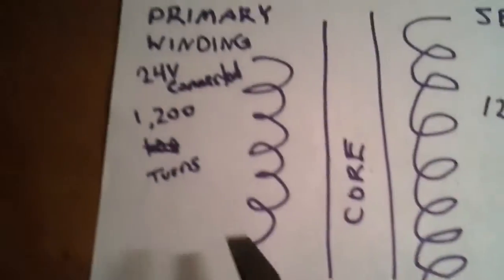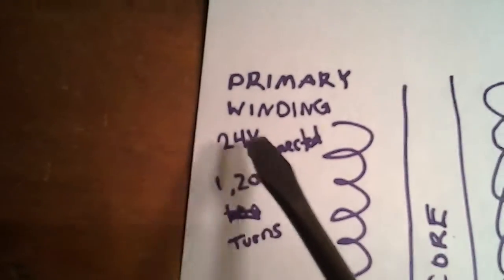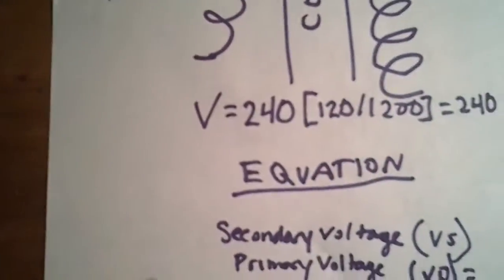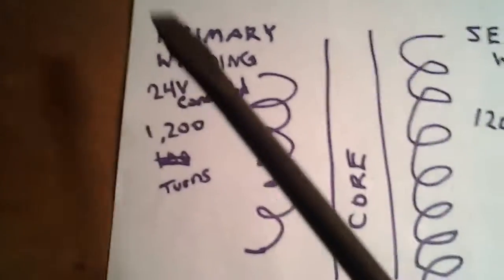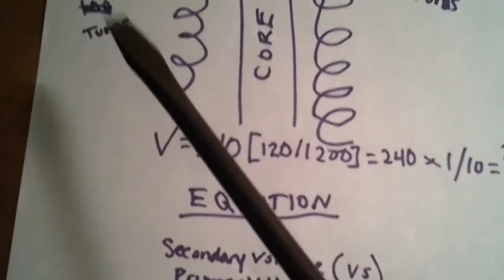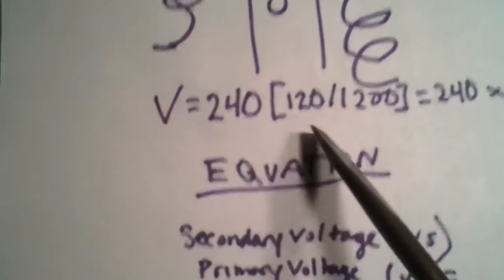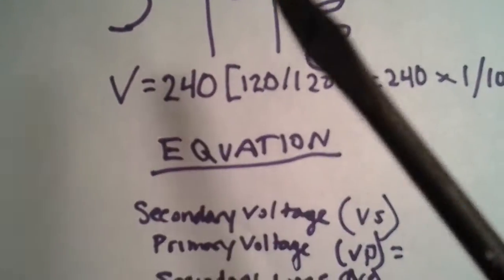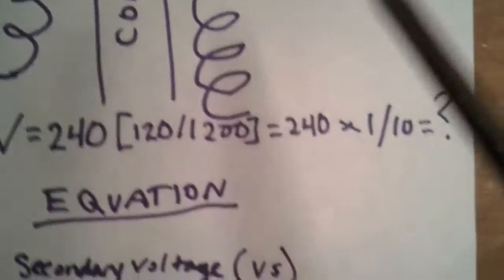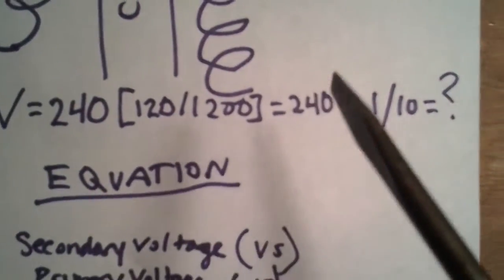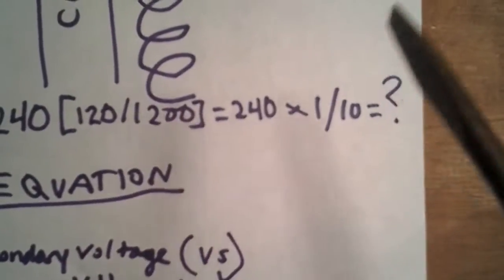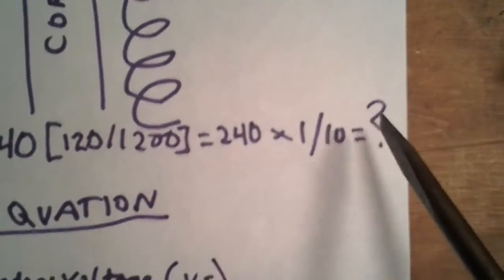Basically, the volts going into this primary winding are - sorry - 240 volts are connecting to this primary winding of this transformer. The voltage is 240 volts, which is 120 to 1,200, equals 240 volts times 1 out of 10. So what would be the output voltage?